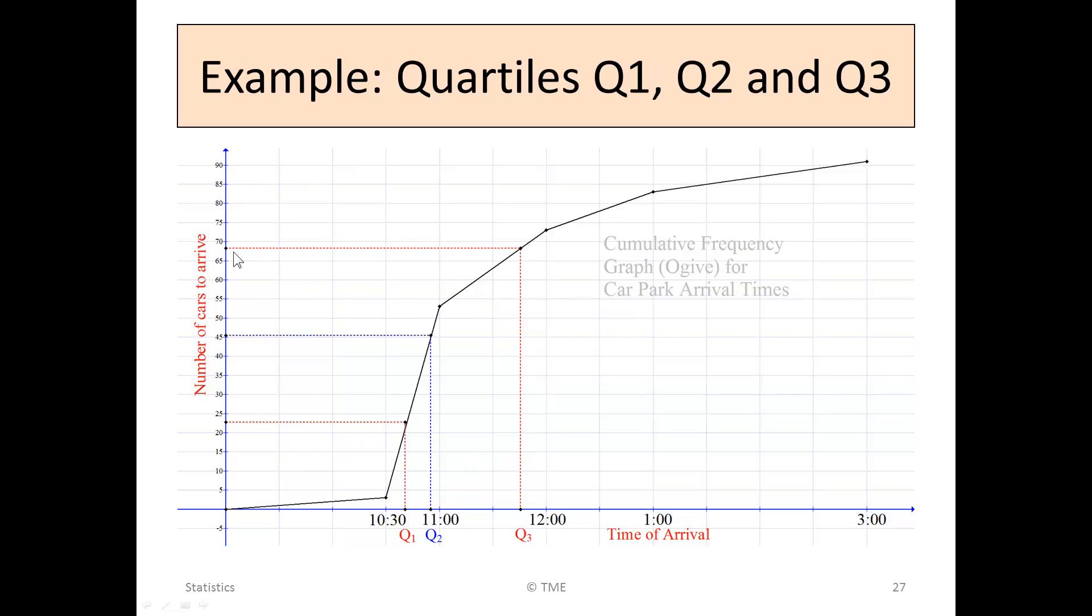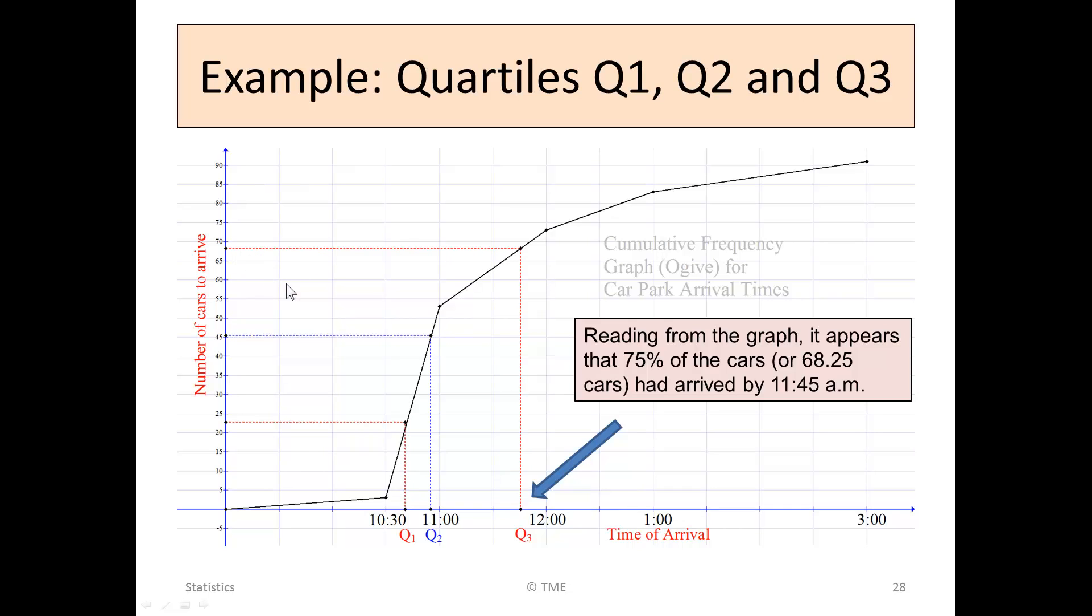In the case of 75% of the cars, or about 68 of the cars, we can see from the graph that, at that point, we exceeded 68.25, approximately about 11:45. Certainly after half 11, not as late as 12, maybe 11:45.